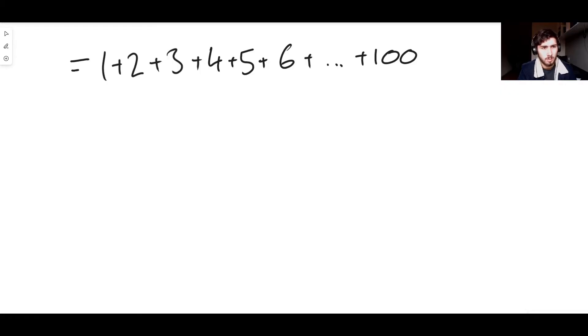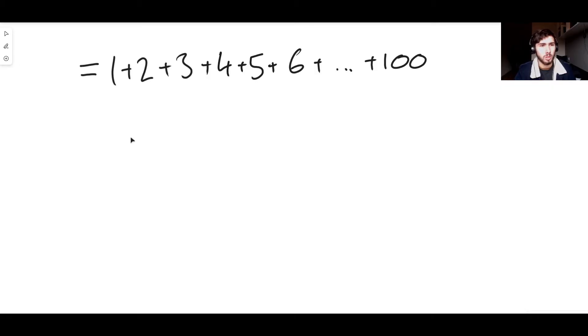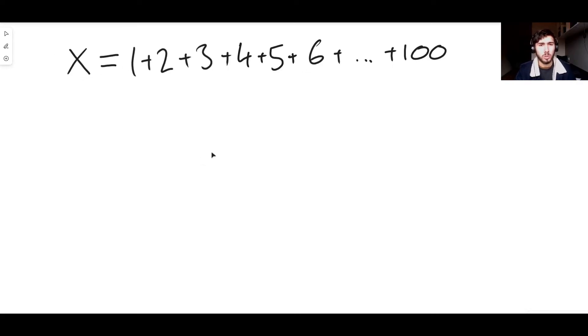What Gauss did was he labeled this sum of numbers. He doesn't know what it's equal to yet, but he's going to label it x. He said that whatever the answer is, that's x. That's what we're looking for. We're looking for x. What is it? Well, you could just add up 100 numbers, but it would take you ages.